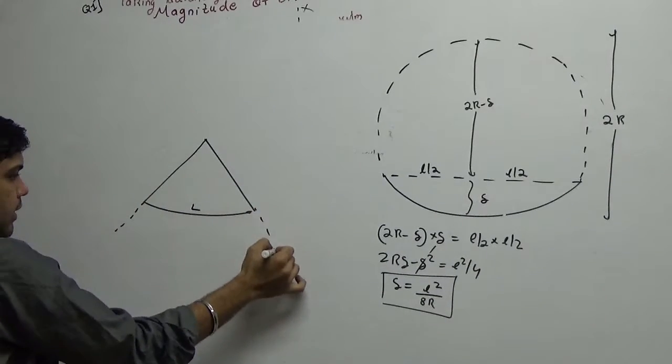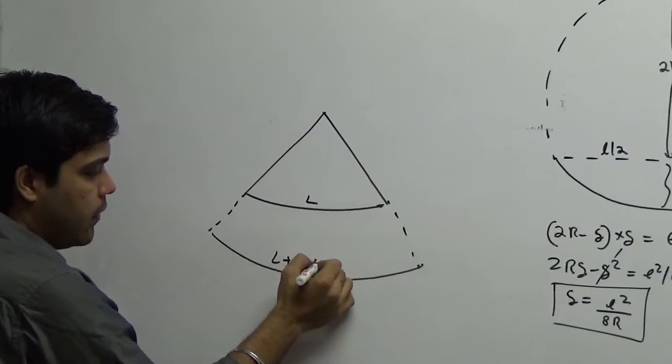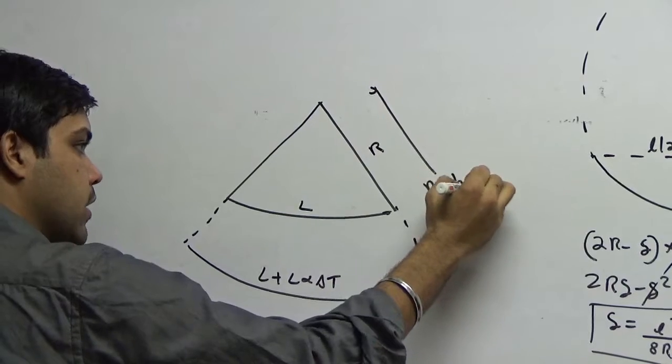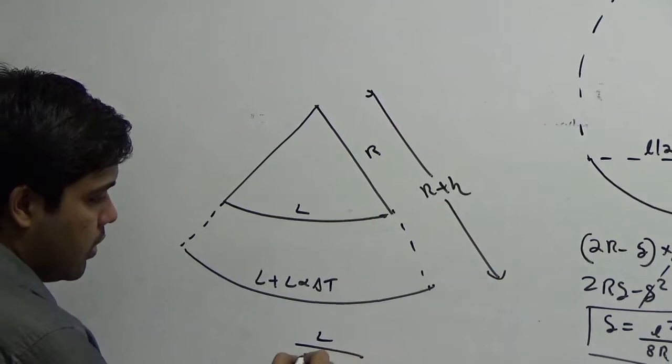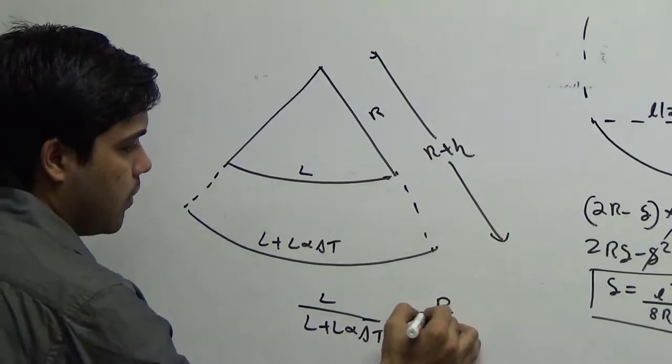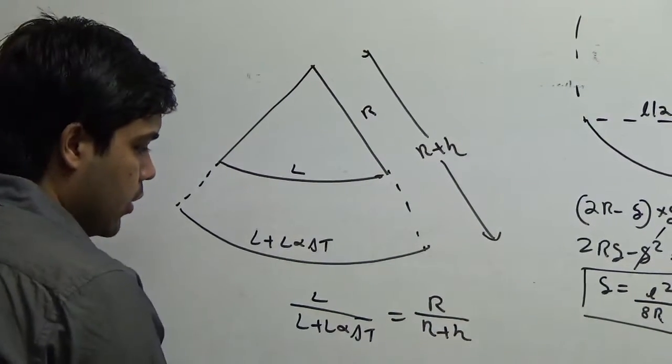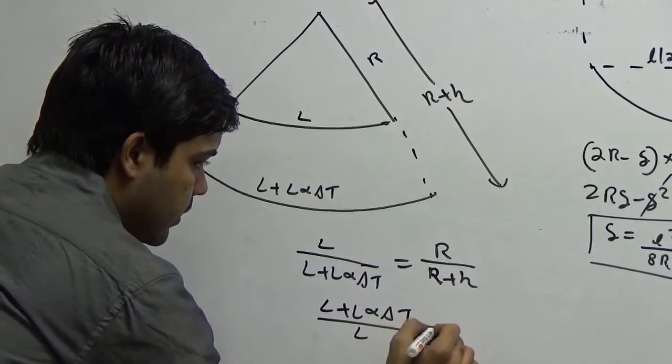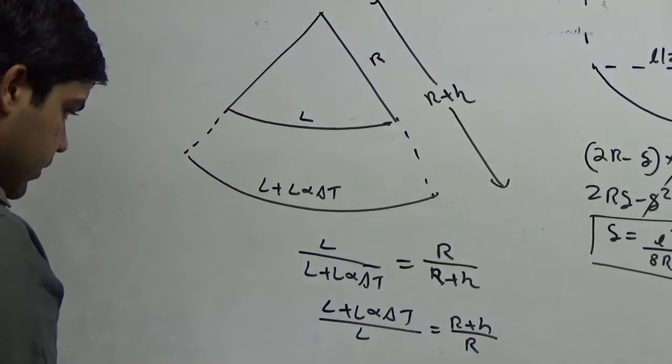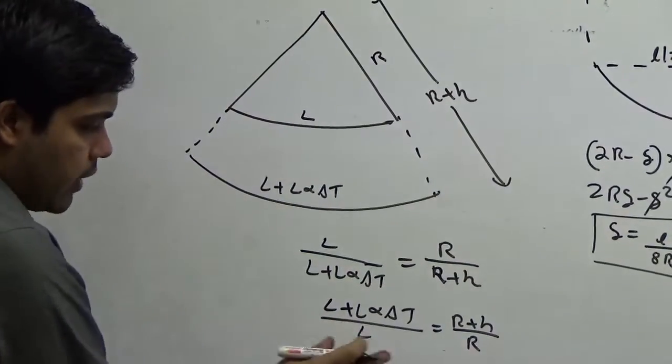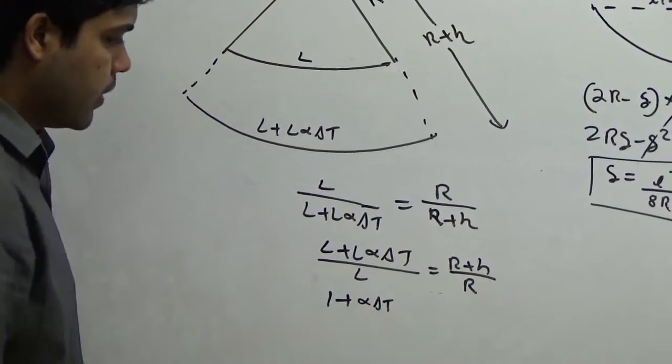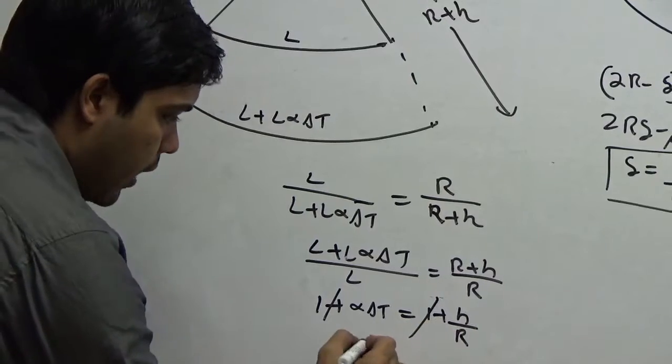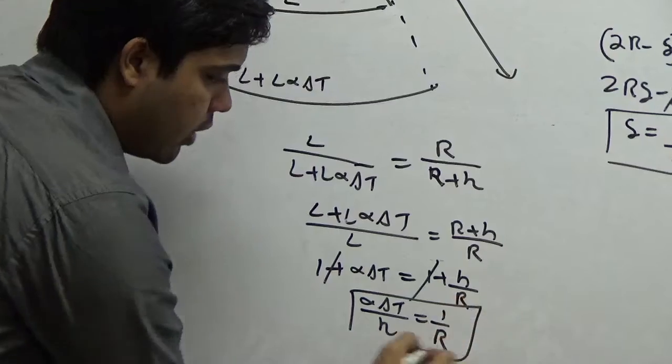Now if this is R, I can say the increase in curvature is R plus H. Again here I can apply the circle property which is L upon L plus L alpha delta T is equal to R upon R plus H. I am interested to find R. So let's inverse it right now first. L plus L alpha delta T upon L is equal to R plus H upon R. If you solve this, you can just separate out the terms. 1 plus L will cancel alpha delta T. 1 plus alpha delta T is equal to 1 plus H by R. 1 minus 1 cancel. Alpha delta T upon H is equal to 1 by R. I got this.